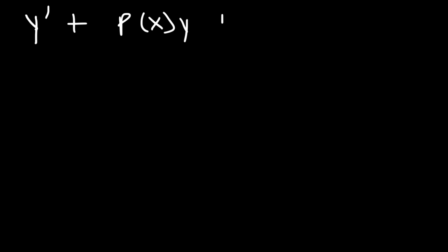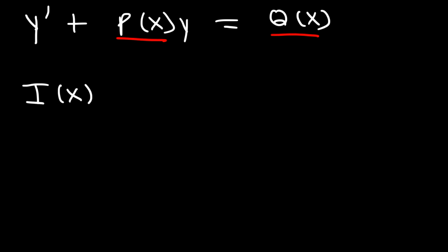In this video we're going to talk about how to solve first-order linear differential equations. The first thing you need to do is write it in standard form: y prime plus p of x times y equals q of x. Once you have it in standard form, you need to identify the functions p of x and q of x. The next step is to determine the integrating factor, which is e raised to the integral of p of x dx.